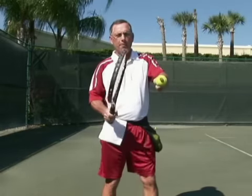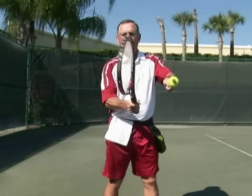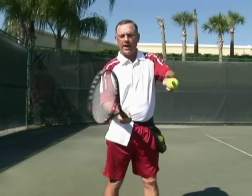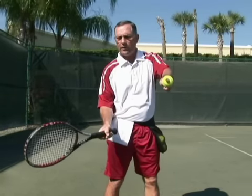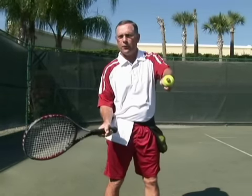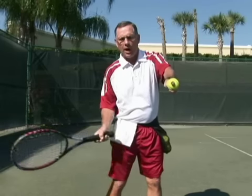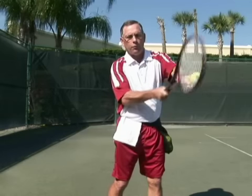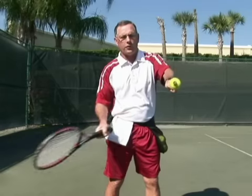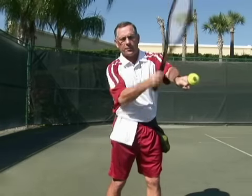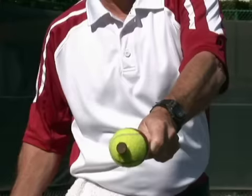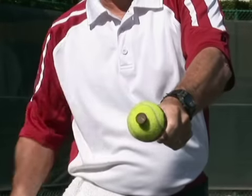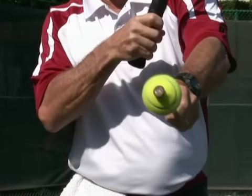In order to hit topspin on the ball, I will have to start with my racket lower than the ball — about 30 degrees lower — I then hit the ball and brush up against the ball in order to impart the topspin. It's this brushing action that gives topspin to the ball, and that's how you hit with topspin.